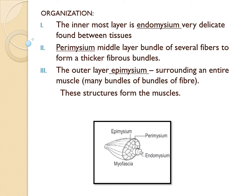The innermost layer is the endomysium, which is a very delicate layer found between the fibers. Perimysium is the middle layer, bundling several fibers to form a thicker fibrous bundle. The outer layer is the epimysium, surrounding an entire muscle — meaning many bundles of bundles of fibers. These all structures form the muscle.